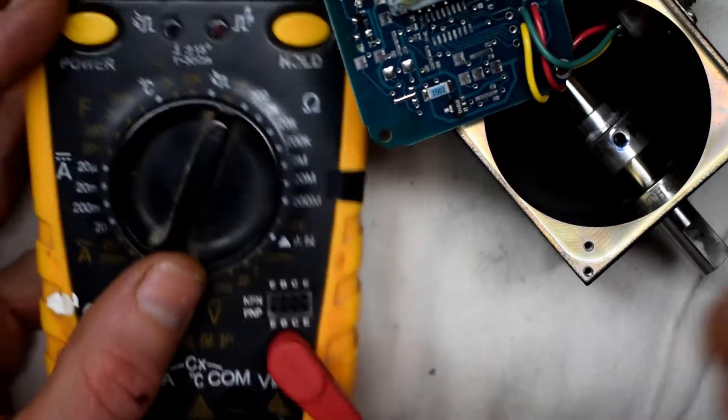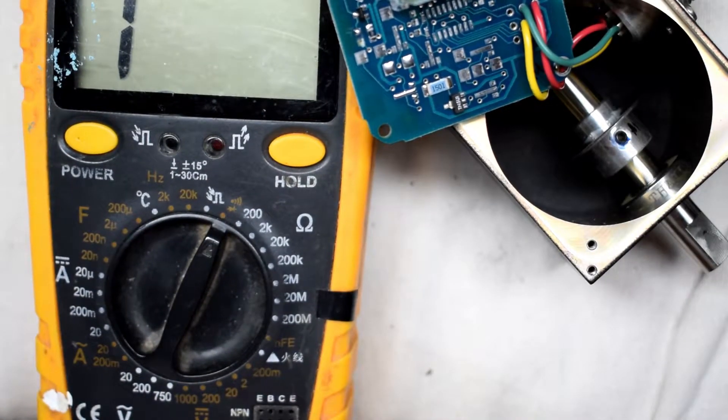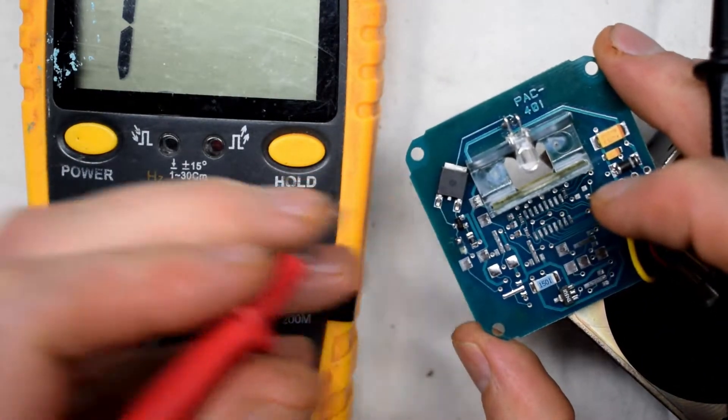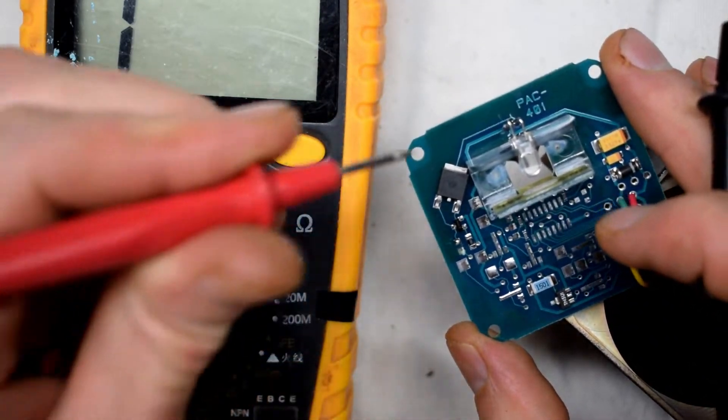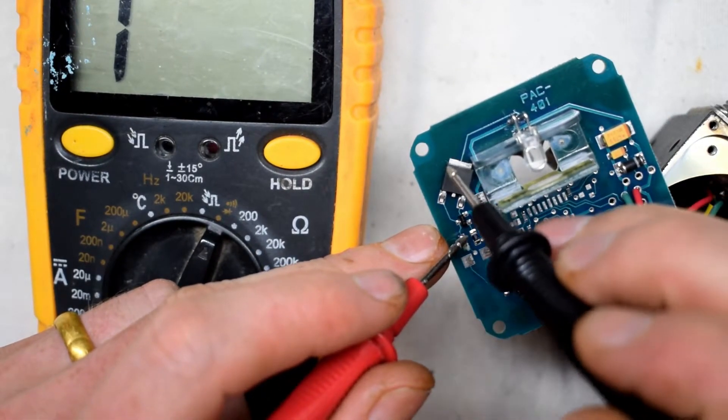by using your multimeter. Put it into diode mode and you can test this MOSFET by putting the... this is the gate, drain, and source.